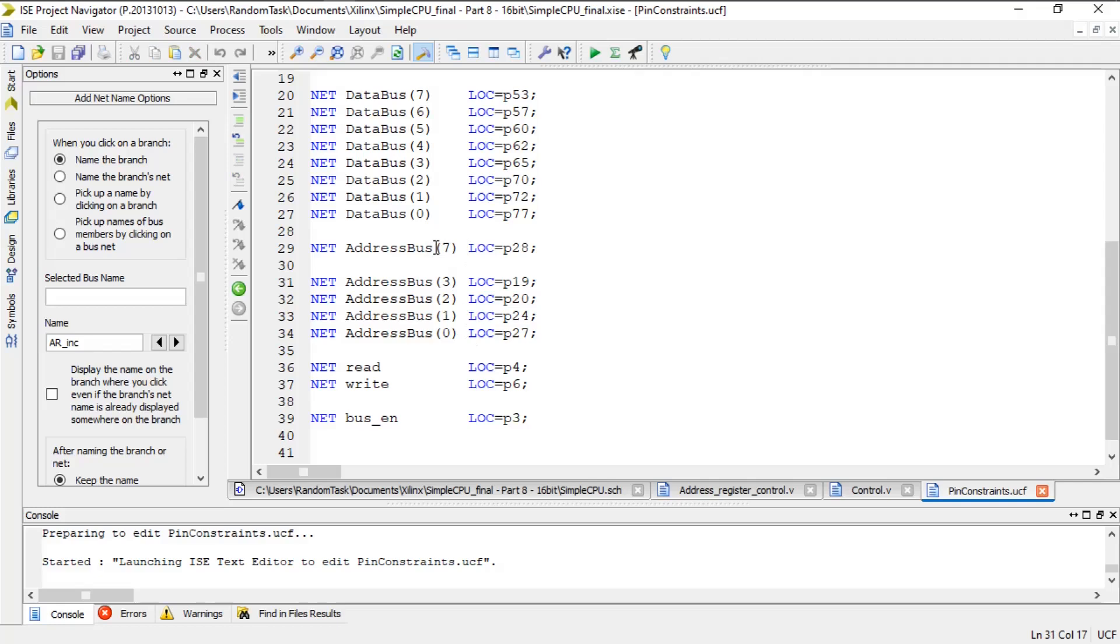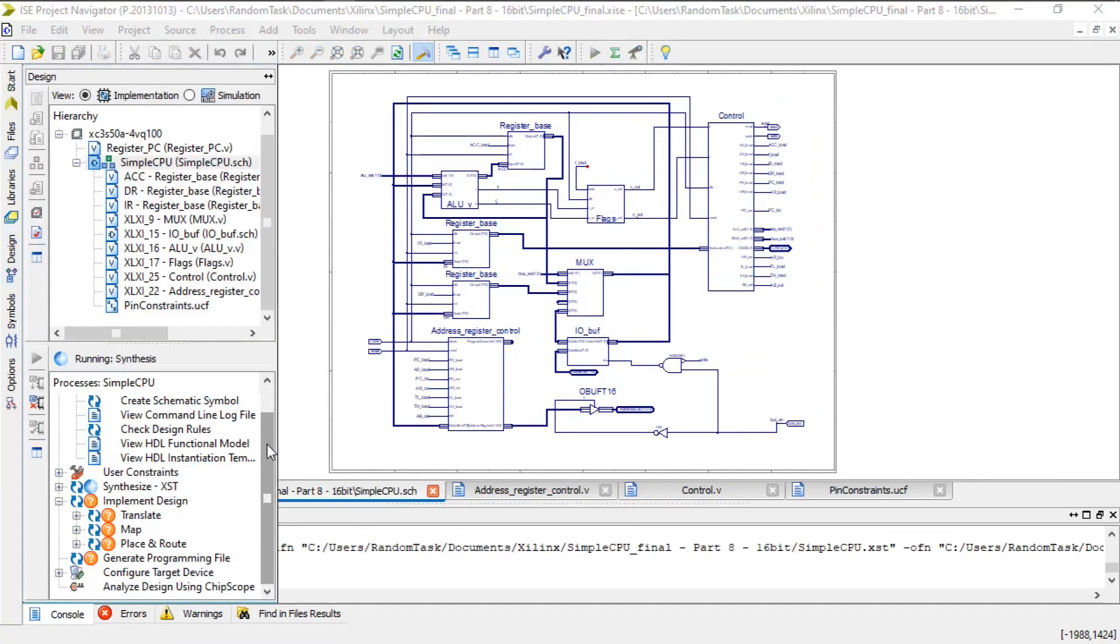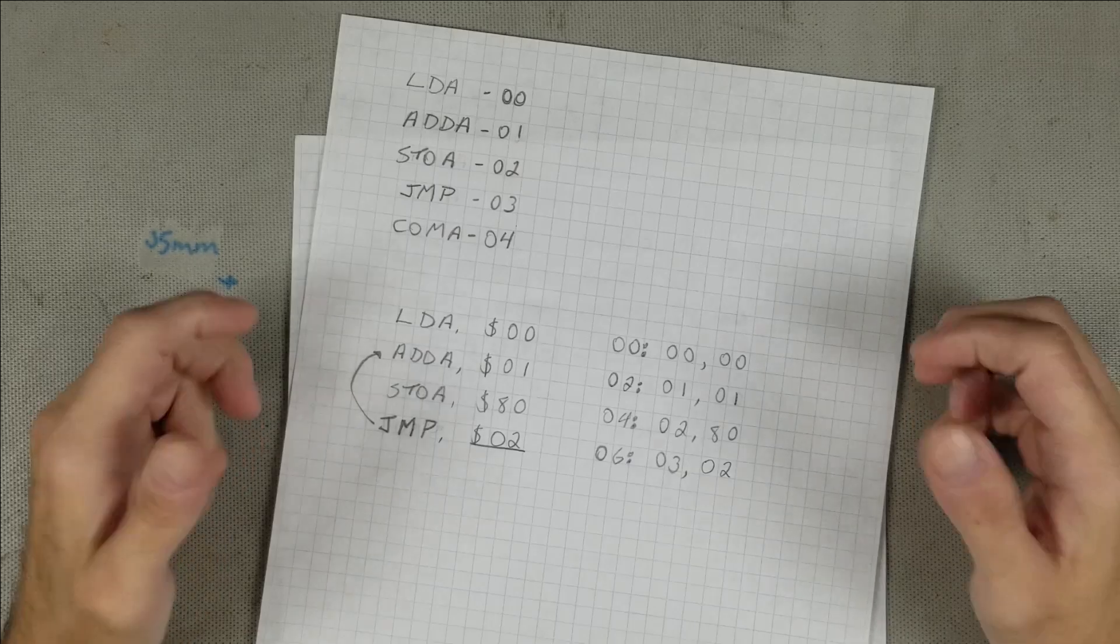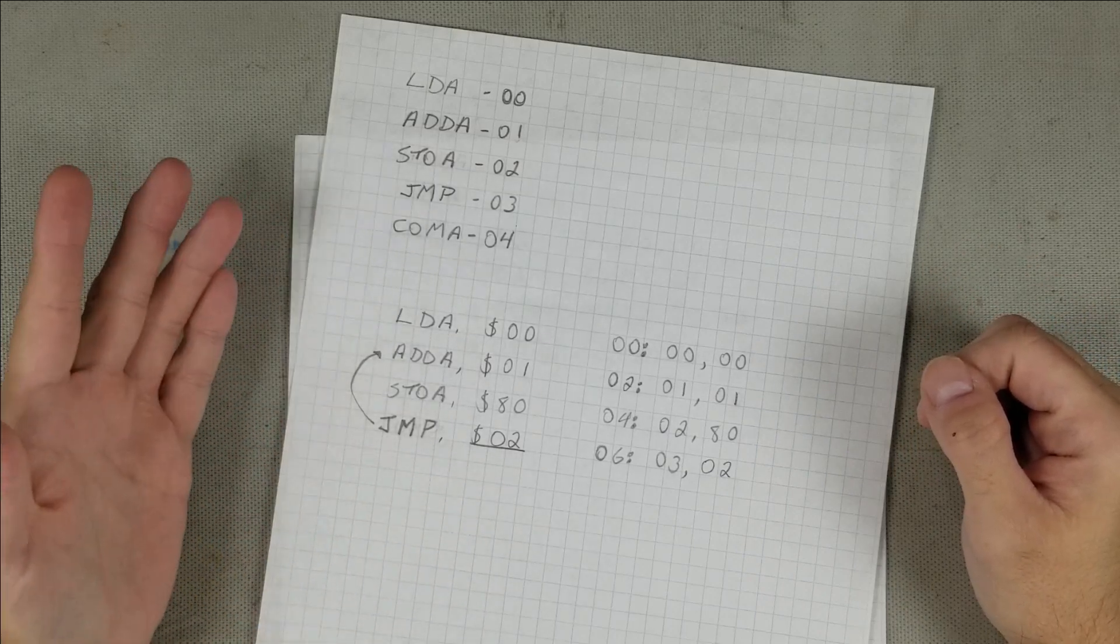Finally, the last change to be made is in the constraints file. Since the CPU is now 16 bits, the address plus 7 needs to be changed to 15, because the store instruction in the program will be changed to address 8000 instead of 80, so we have to monitor that uppermost bit. Everything else will remain the same. Then, implement and generate the programming file.